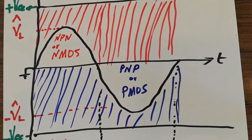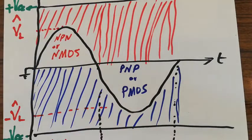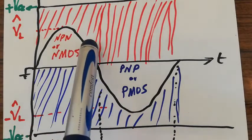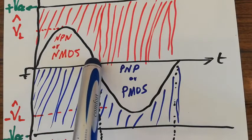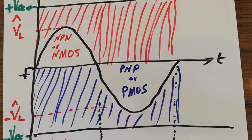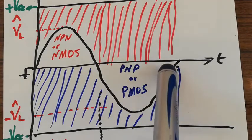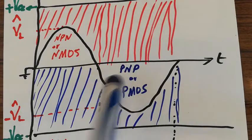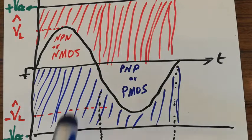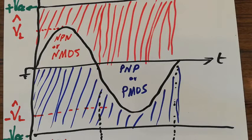As we see in the graph, we have the plus VCC supply for the drivers, the ground, and the minus VEE. We have the load signal here. The NPN transistor is responsible for the positive part, and the PNP transistor, which takes its power from the minus VEE, handles the negative part.